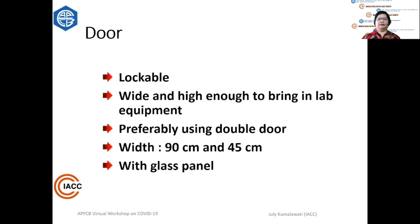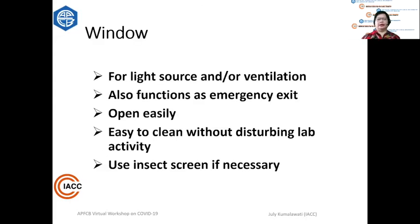Doors should be lockable, wide, and high enough to bring instruments into the lab. Preferably use a double door — typically 90 cm and 45 cm, or 290 cm combined. Put a glass panel on the door so you can see if there is somebody behind it to prevent accidents when opening. Windows can be used as a light source or ventilation and can also function as an emergency exit, so they should be easily opened and cleaned without disturbing lab activity. If necessary, put an insect screen.